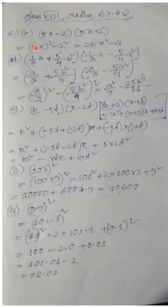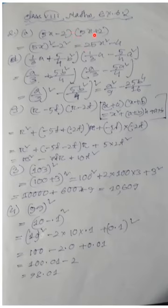First question: find the products using suitable identities. (5x minus 2)(5x plus 2). This is of the form (a minus b)(a plus b), which equals a squared minus b squared.